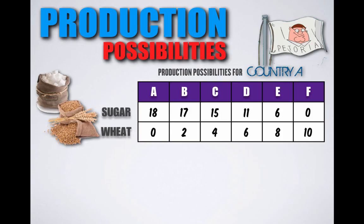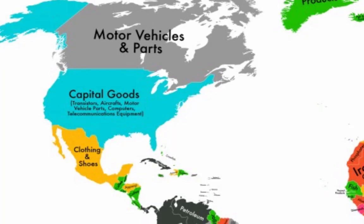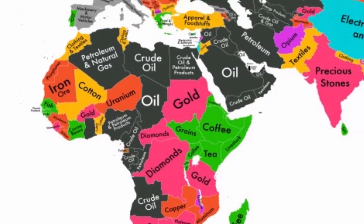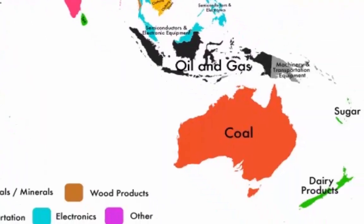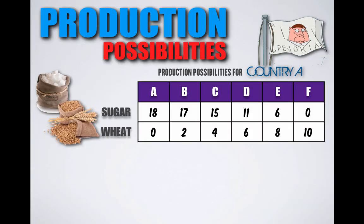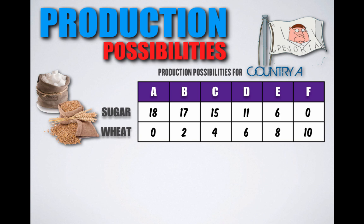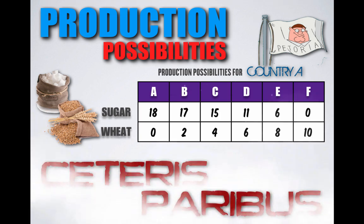Petoria can only produce two goods, sugar and wheat, given the scarce resources available to them. Here's where that simplistic example part comes in. We know in the real world that countries can produce millions of goods and services, but to show the concept of production possibilities and calculating opportunity cost, we're going to assume that the country of Petoria can only produce two goods. The math could get really crazy with millions of goods. What we know for sure is given this function, these are the various combinations of sugar and wheat that Petoria can produce, Ceteris Paribus.